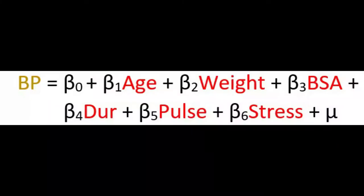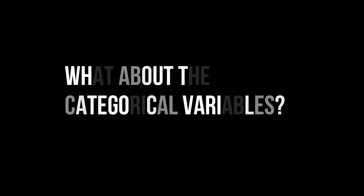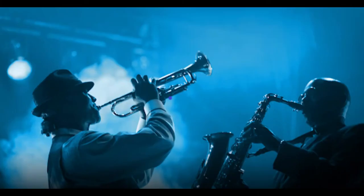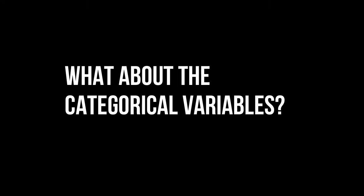This is an example of a regression equation that uses quantitative variables. What then do we do about the categorical variables? Categorical variables such as gender or the type of music that you play are variables that cannot be measured. So how do we use them in the regression model?